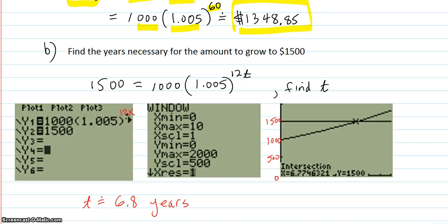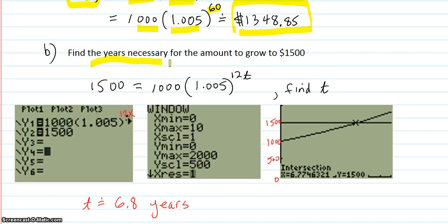Part B. Find the years necessary for the amount to grow to 1,500. To solve that we need logarithms, which is coming up. But let's do it with the calculator method because you should always know how to do both.